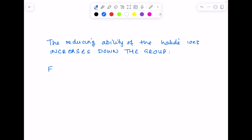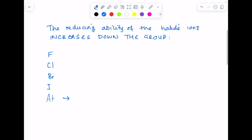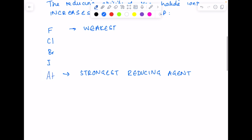So if we consider the elements, fluorine, chlorine, bromine, iodine, astatine, by definition, astatine is the strongest reducing agent, whereas fluorine is the weakest. But what is our explanation for that?